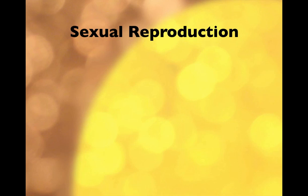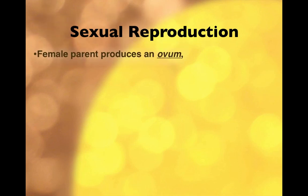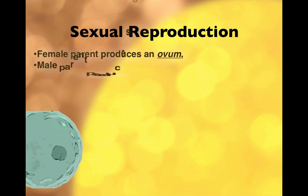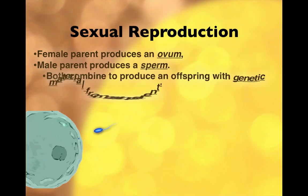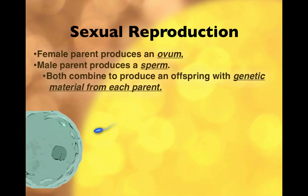In sexual reproduction, generally in animals, you have a female which produces an ovum — we think of that as the egg — and the male produces a sperm. Both of these combine to produce an offspring that has genetic material from each parent.